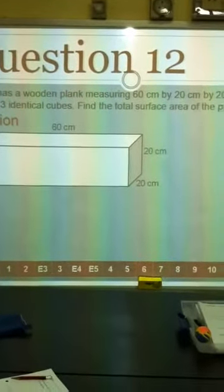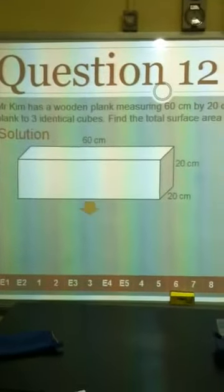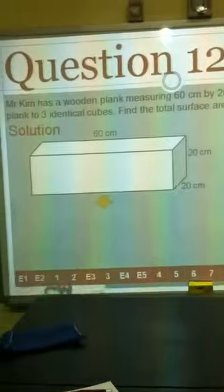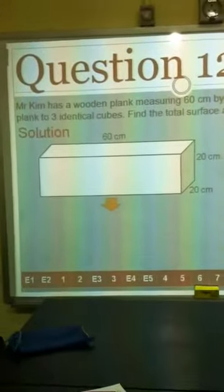But you need to measure because it must be 3 identical. So 60 divided by 3 will give us... Oh wait, I didn't even read it. 60 divided by 3! 20! So the length now becomes... Can you see it's become like this? Yeah.